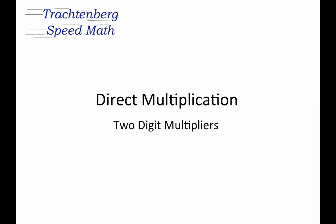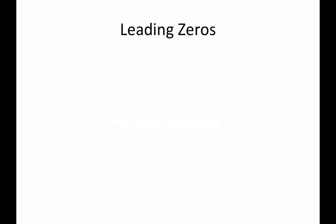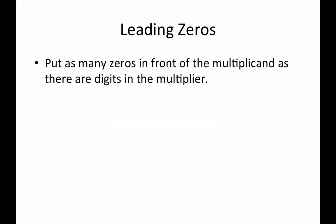Hi, this is Tony from Trachtenberg Speed Math. Today we're going to have a look at direct multiplication using two-digit multipliers. When doing the direct multiplication we use leading zeros. The rule for the leading zeros is to put as many zeros in front of the multiplicand as there are digits in the multiplier.